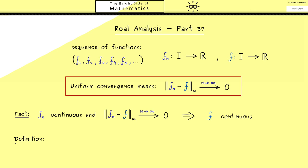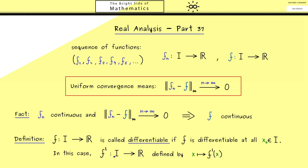Therefore we first need a new definition to make this pointwise property to a global property. It works exactly the same as for continuity. We call a function f differentiable if f is differentiable at all points x0 in the given domain I. In this case we can easily define a new function we call f'. For the definition we simply map each point x in the domain I to the derivative at this given point. And of course we also call this new function simply the derivative of f.